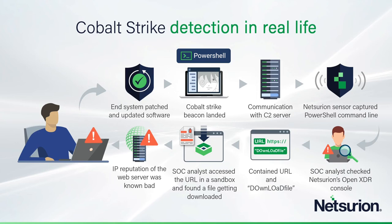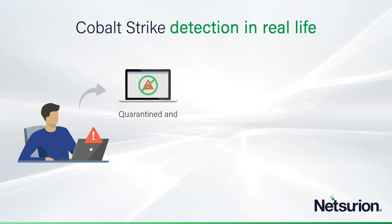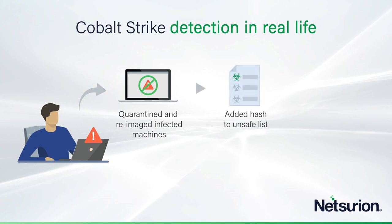That gave enough information to escalate to the MSP: where has this occurred, and what's going on? The recommendation was to isolate those endpoints and re-image them, because it's probably hopeless to try to find and fix it otherwise. The MSP was able to do this promptly and prevent any further damage into the customer network — an excellent example of how you could have all the protection in the world, but it won't be enough if you're not watching constantly. All the file hashes were added to the unsafe list so that the application control function of EventTracker would auto-terminate these if they had managed to spread laterally inside the network.